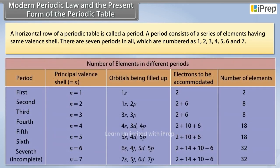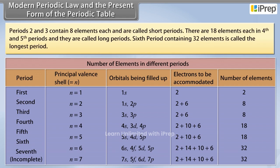There are 7 periods in all which are numbered as 1, 2, 3, 4, 5, 6 and 7. Periods 2 and 3 contain 8 elements each and are called short periods.